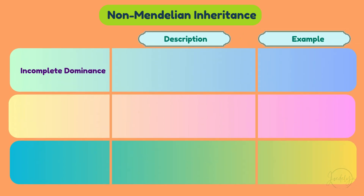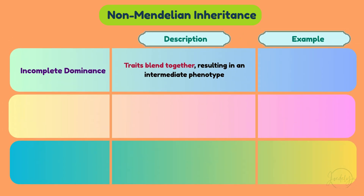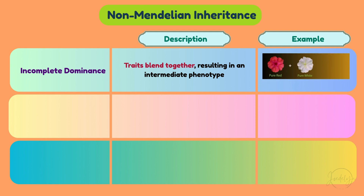Incomplete dominance: traits blend together, resulting in an intermediate phenotype, like crossing a red and white flower to get a pink one. An example of this is four o'clock plants.